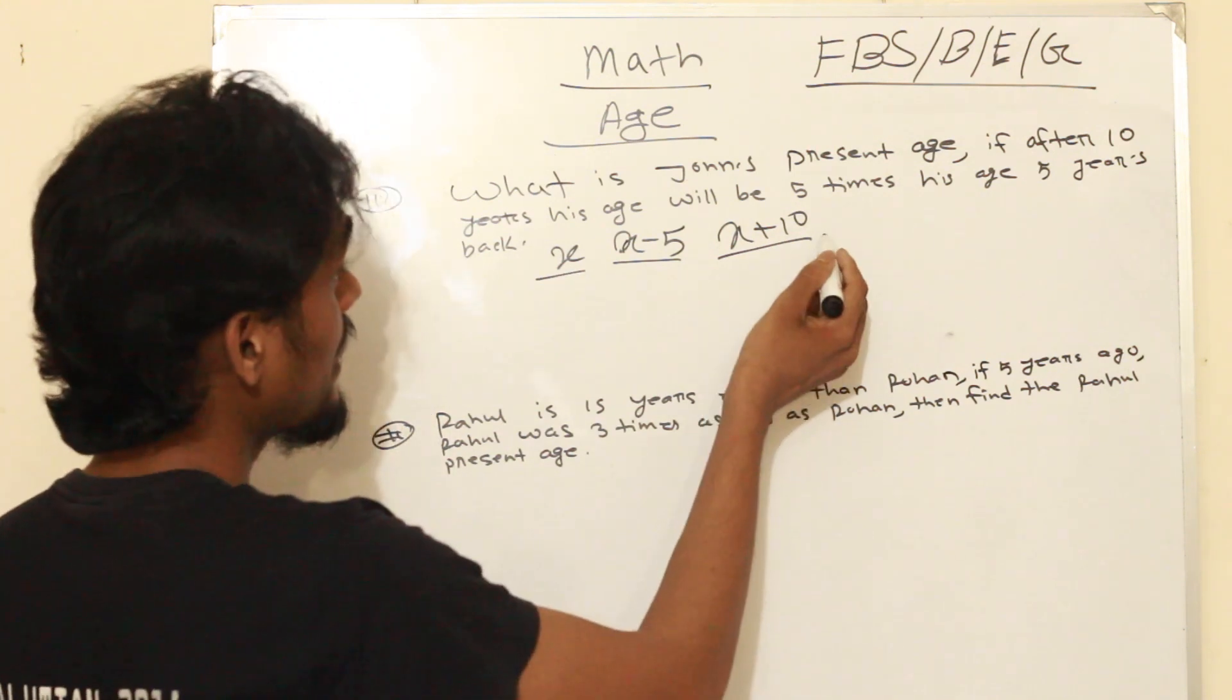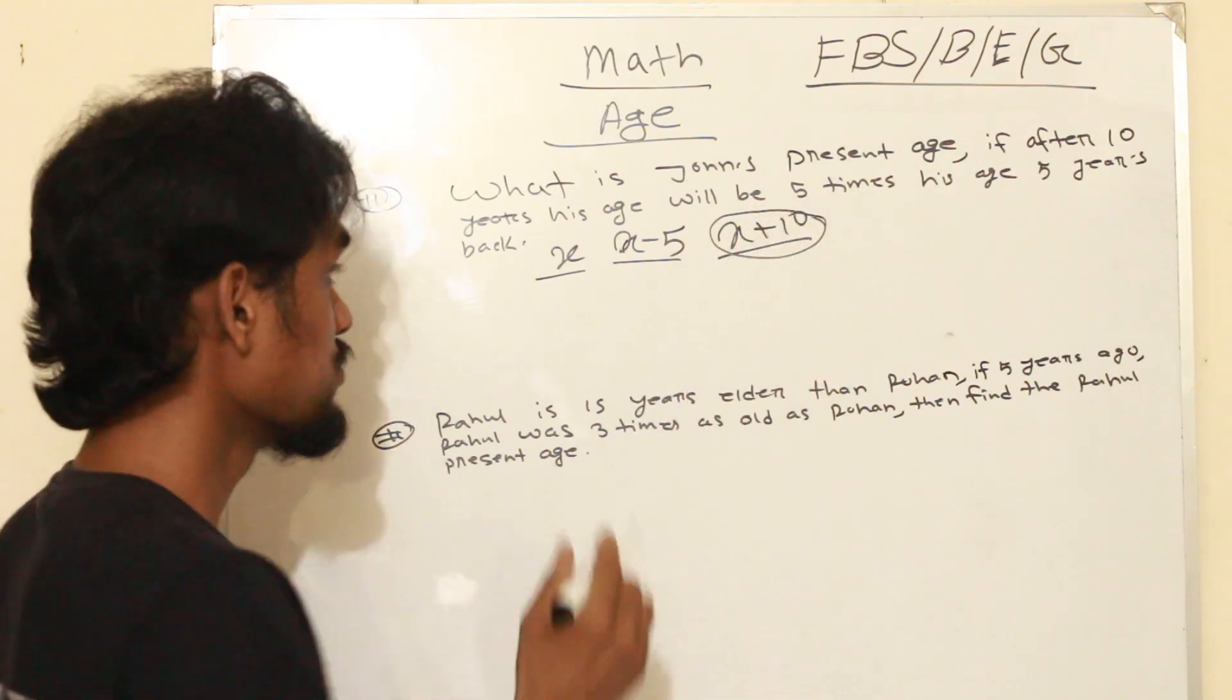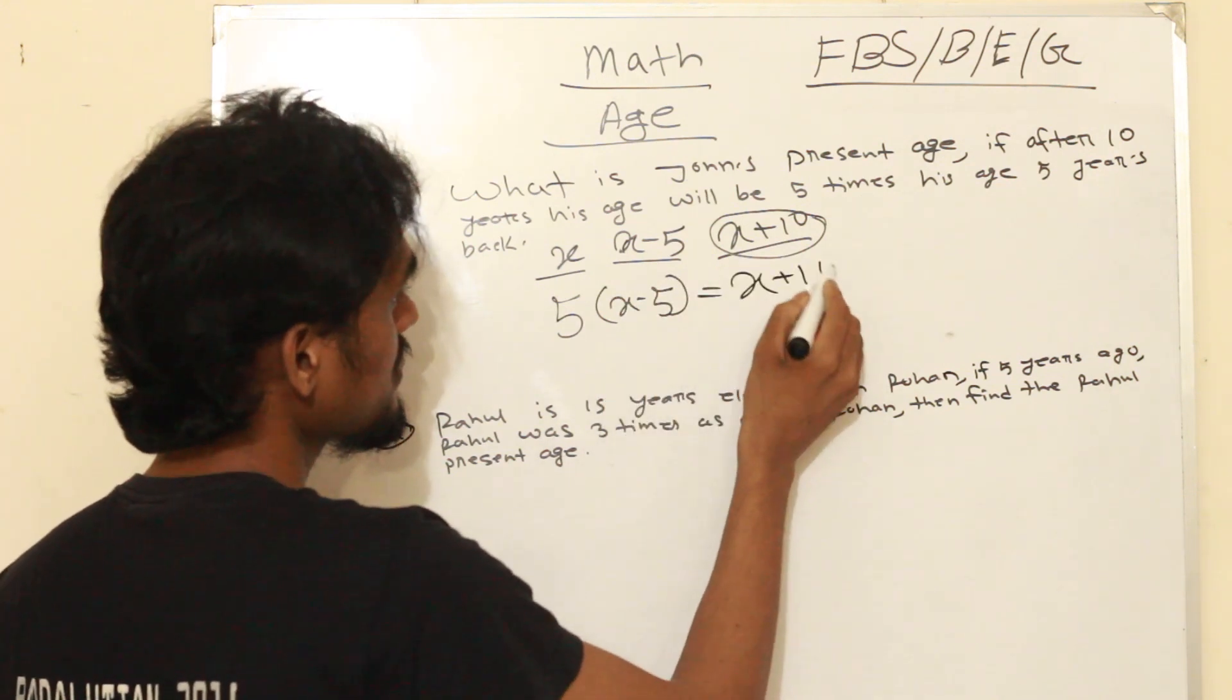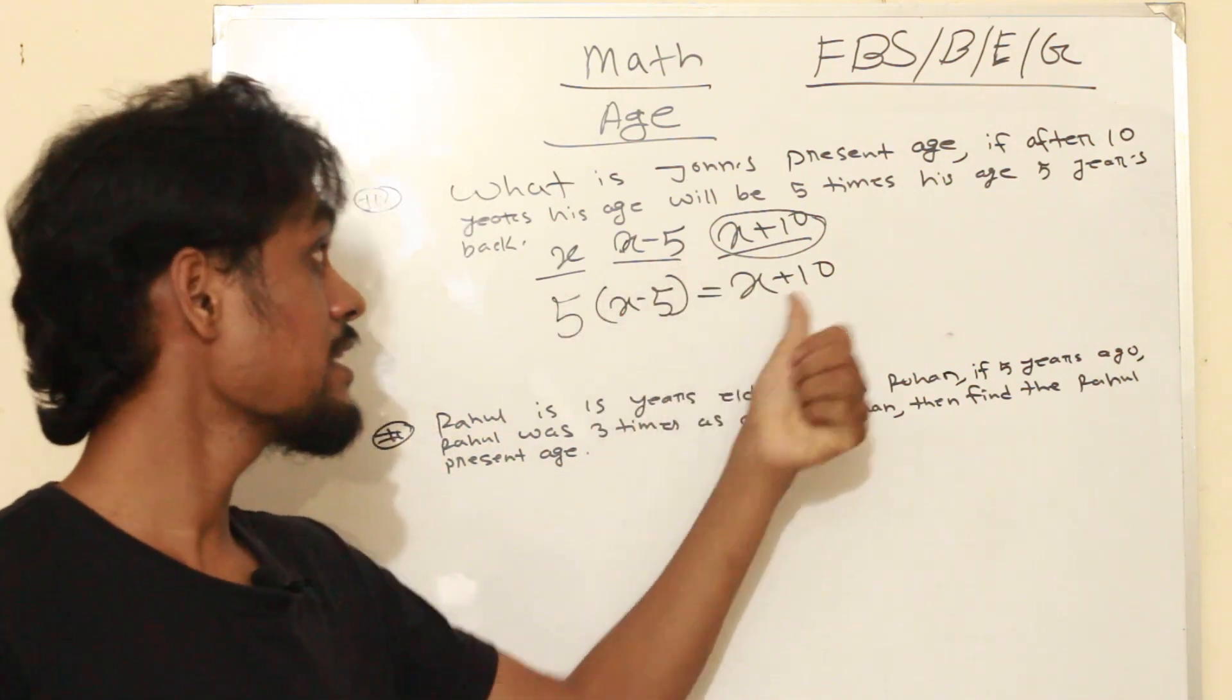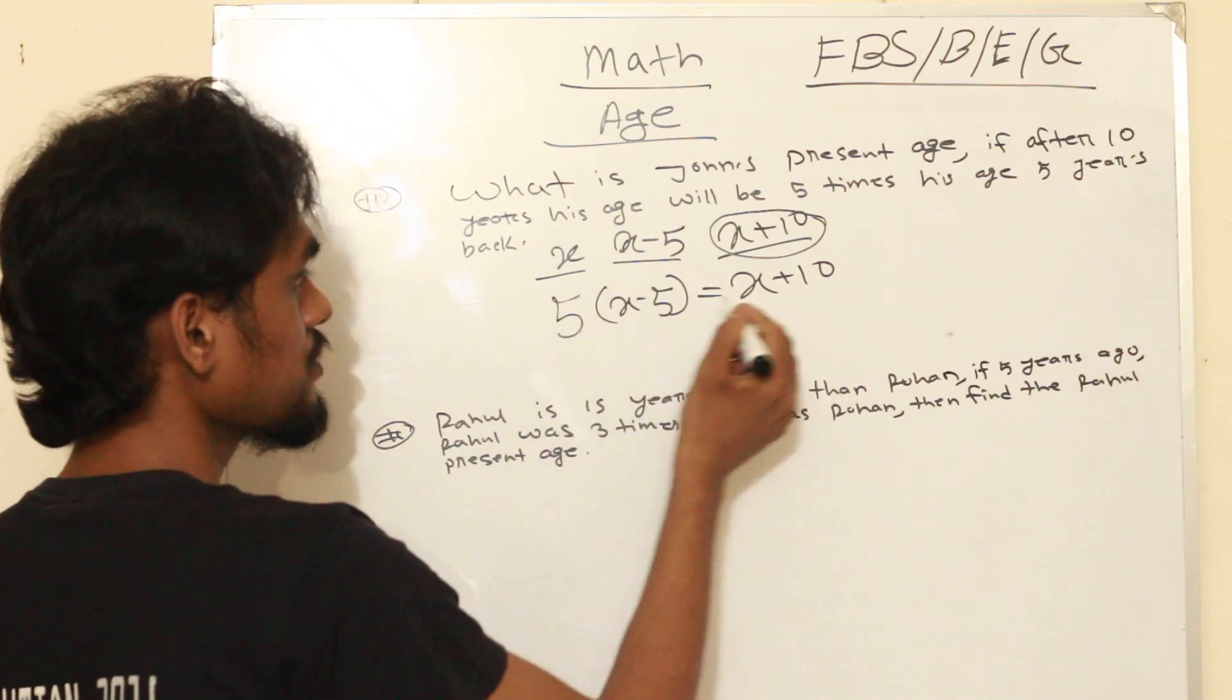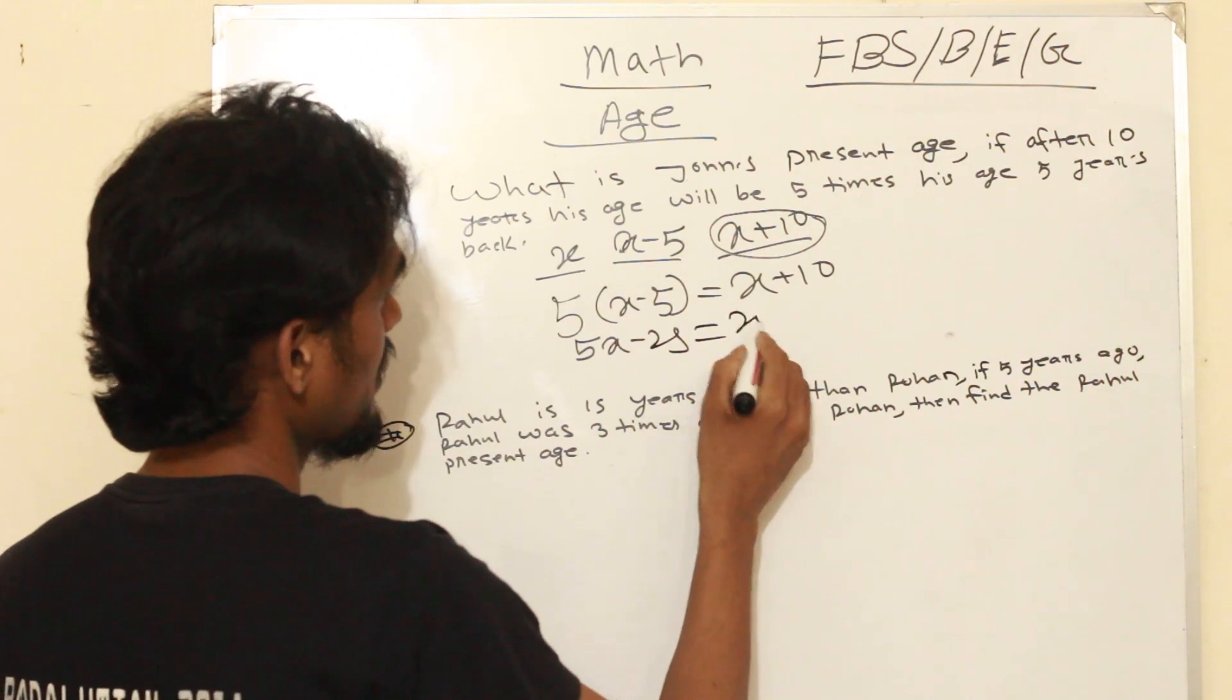So when x plus 10 equals 5 times x minus 5, we get x plus 10 equals 5 times x minus 5. That means the age then will be 5 times what it was. Let me write it: x plus 10 equals 5 times x minus 5, which gives us x plus 10 equals 5x minus 25. Just simple calculation.